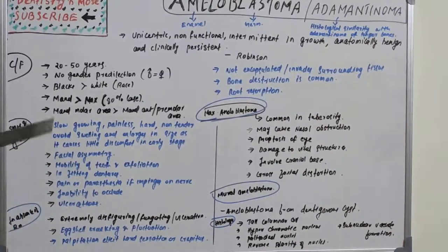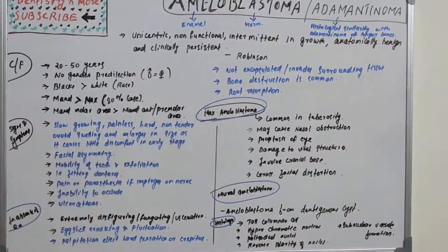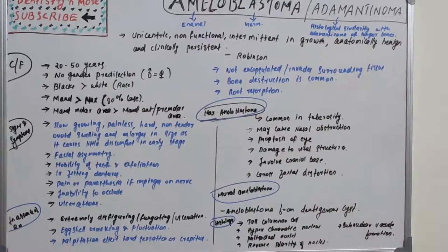Histological features include tall columnar cells, hyperchromatic nucleus, palisaded nucleus, reverse polarity of nuclei, and subnuclear vesicle formation. Ameloblastoma is a lengthy topic — we have covered basic features, clinical features, signs and symptoms, untreated consequences, maxillary involvement, and histology.